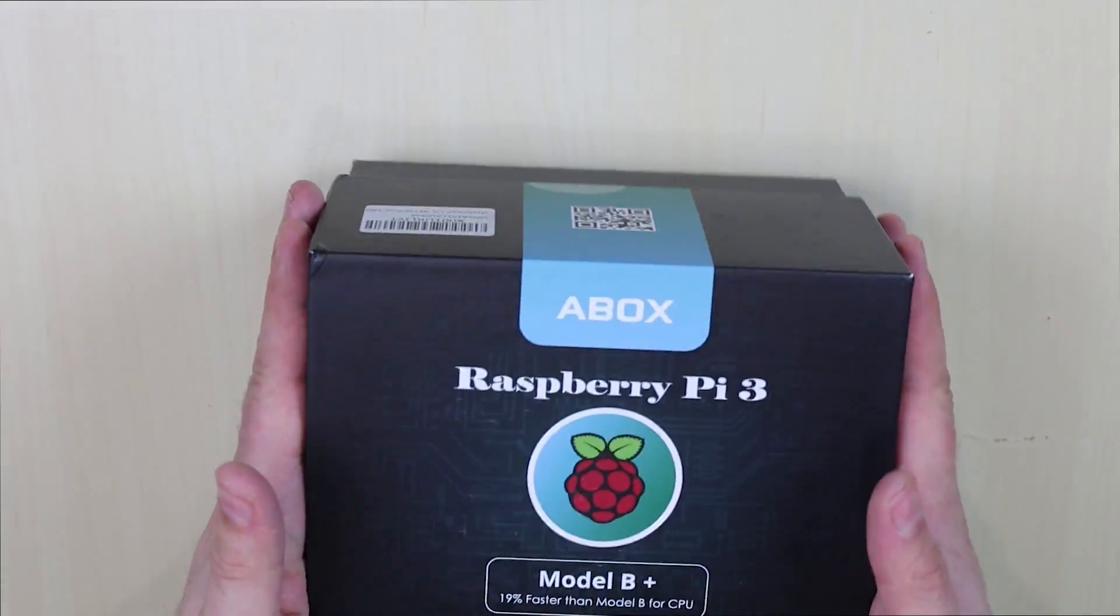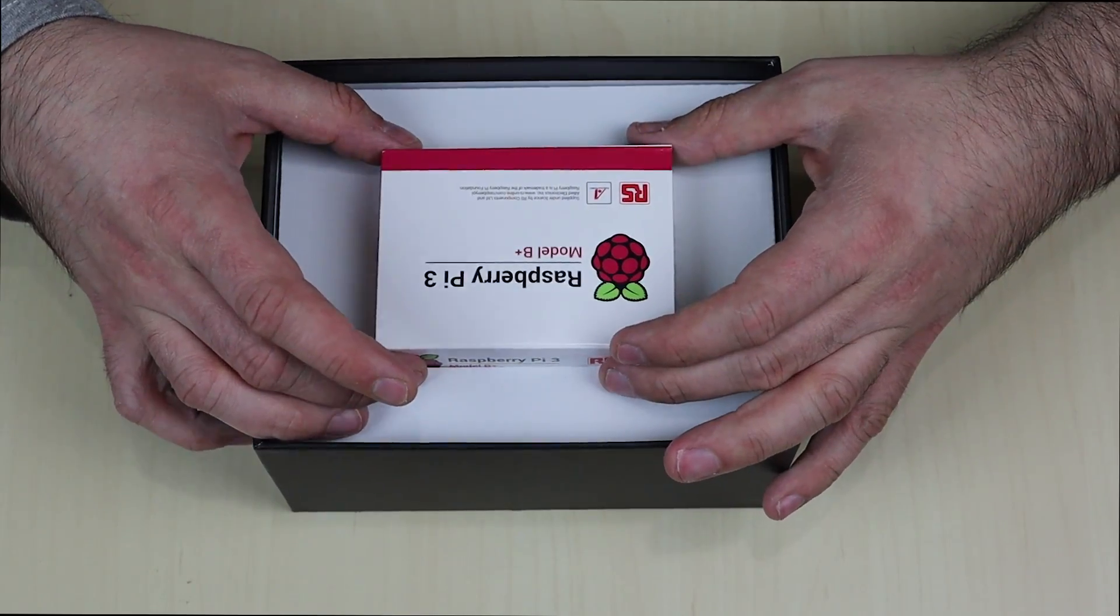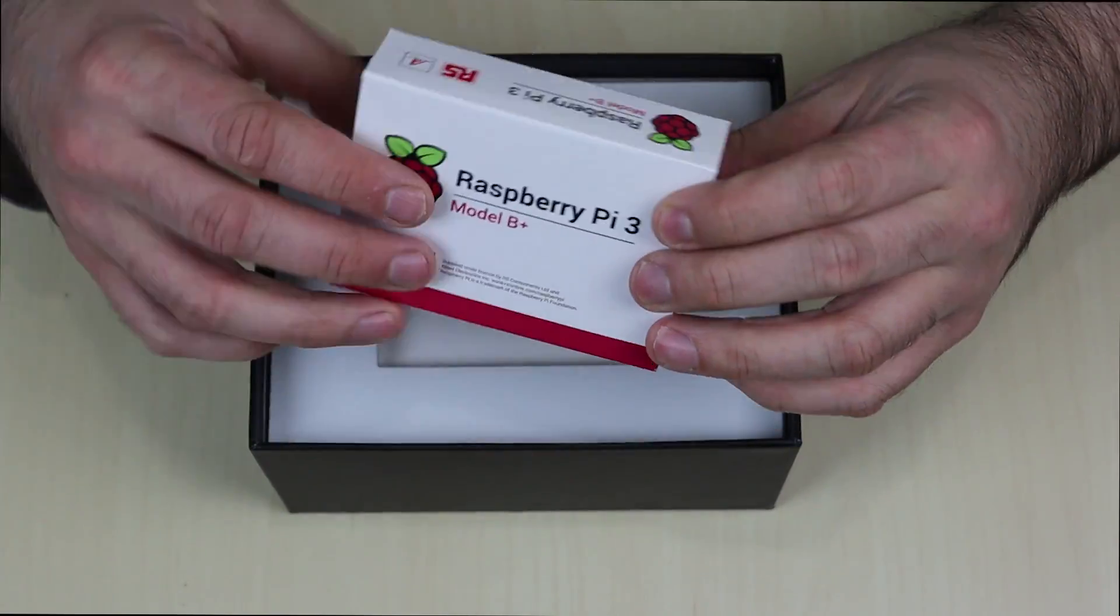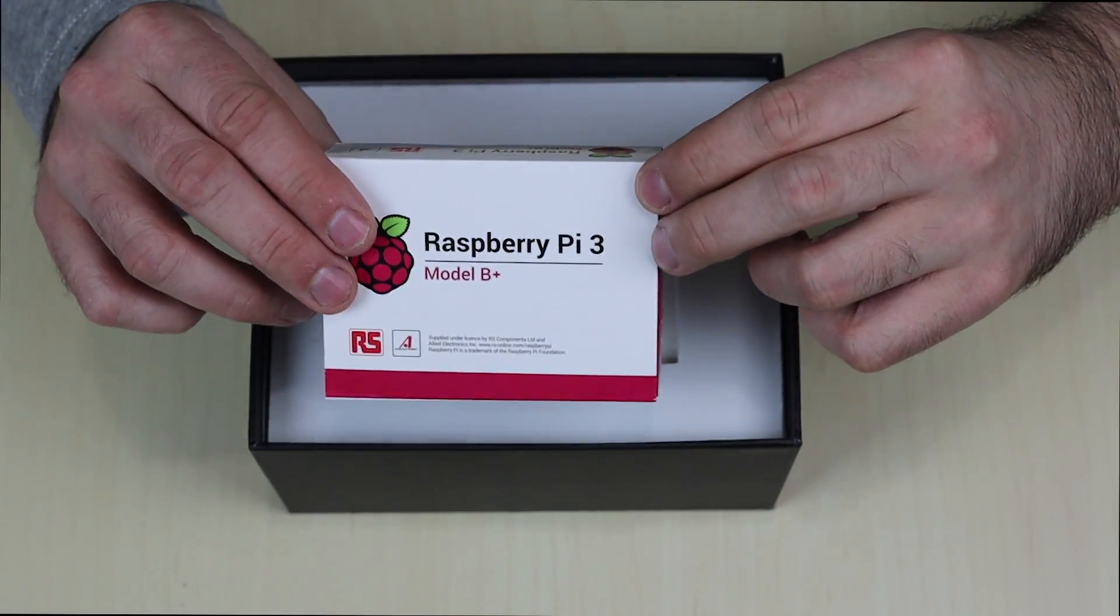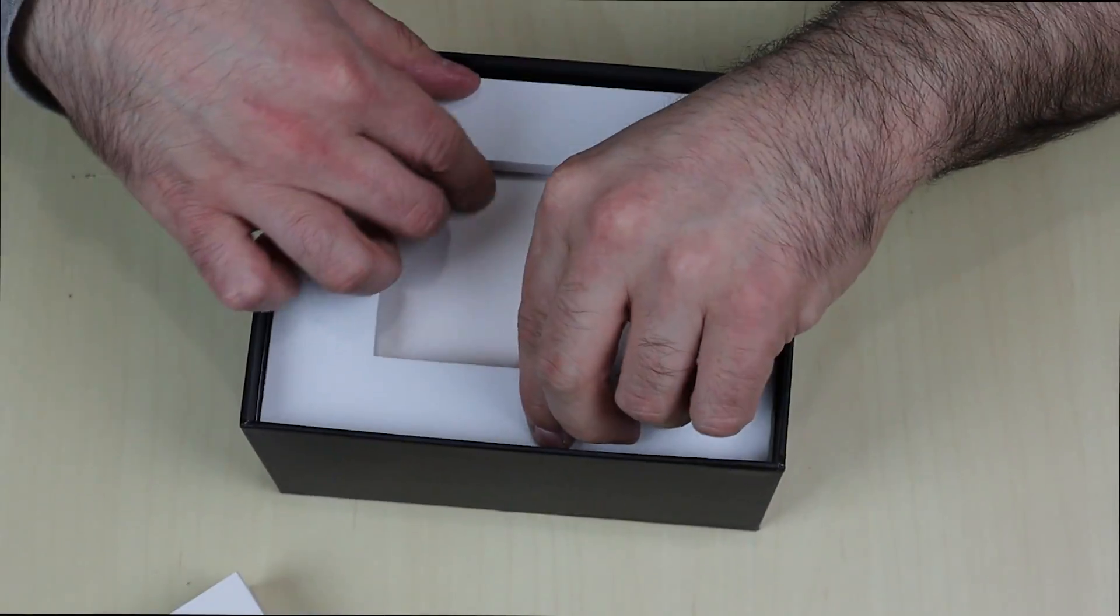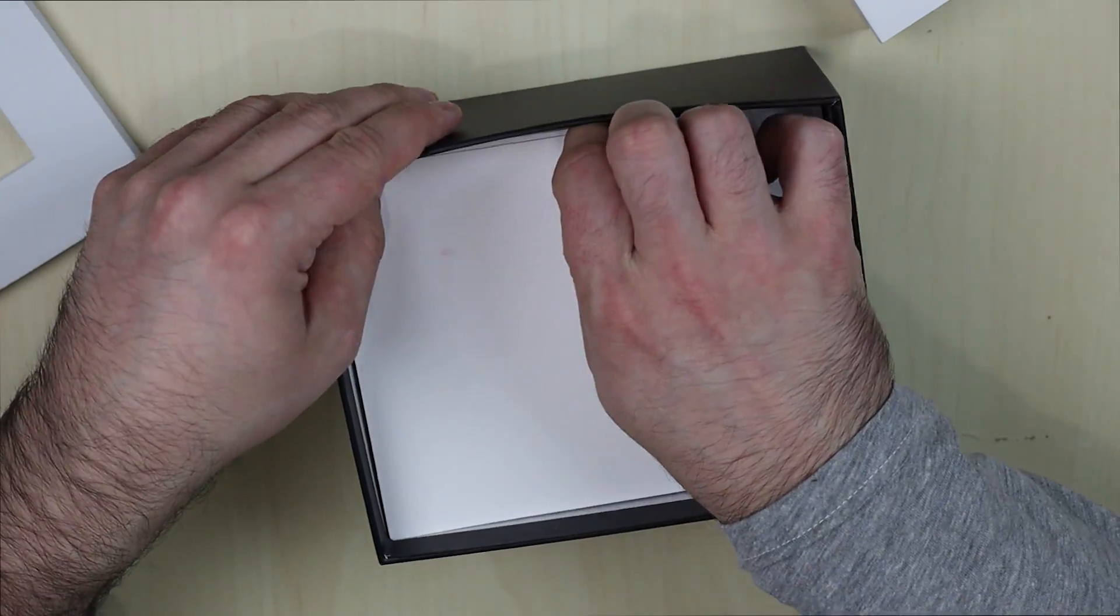Now this literally just come off easily. Alright, guys. In the box, we have the Raspberry Pi 3 Model B Plus, the newest Raspberry Pi. I have one of these. This is my second one now. I'm really grateful. This comes in the kit, by the way. Let's get this aside here. Let's lift this off.